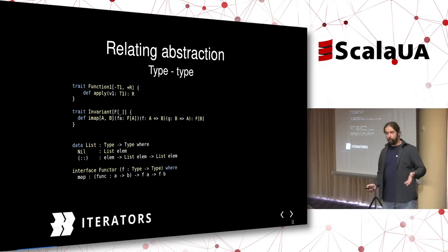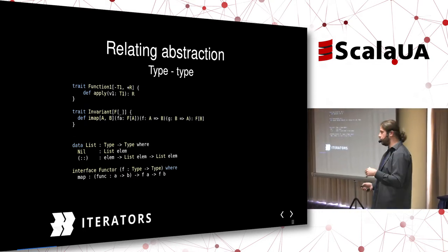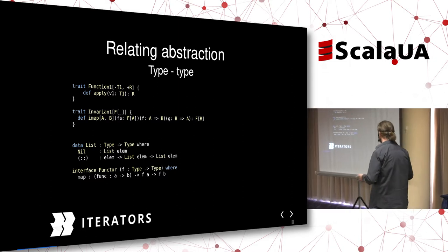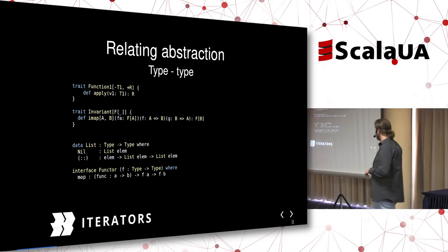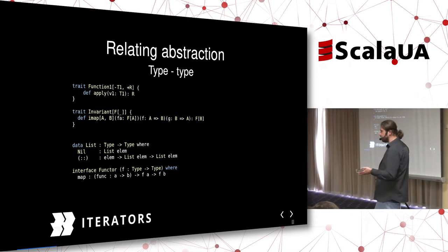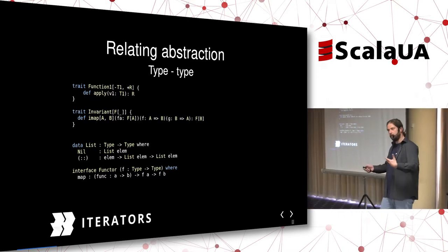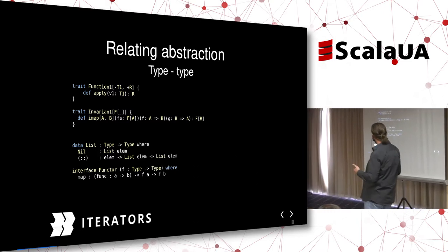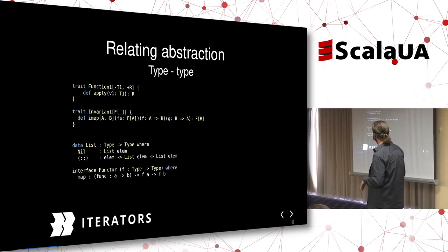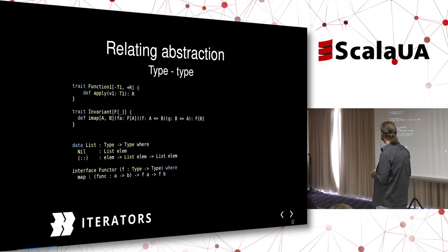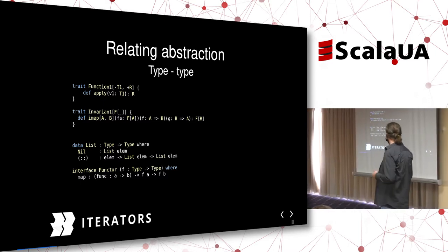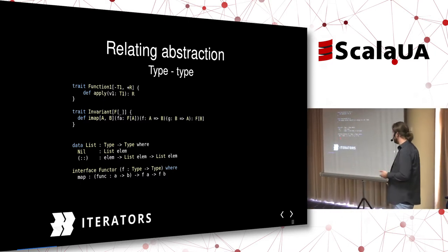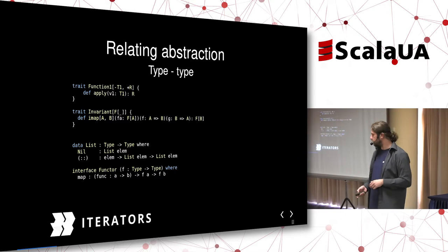If you allow a type to depend on a type, what you get are type constructors. You can form elaborate types like Function1, a function type constructor that depends on two types; a list type; higher-order types like the invariant type from Cats, which takes another type constructor; the functor type, and so on.